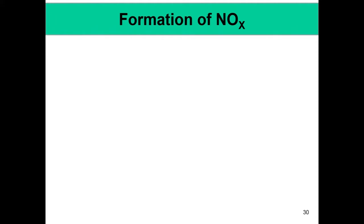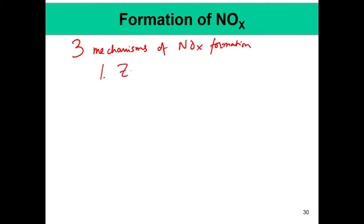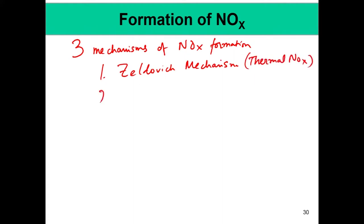There are essentially three mechanisms of NOx formation. One is called the Zeldovich mechanism, or the formation of thermal NOx. The second is the prompt NOx, and the third is the nitrous N2O route. Using these three, we can describe the formation of NOx in a very comprehensive manner.